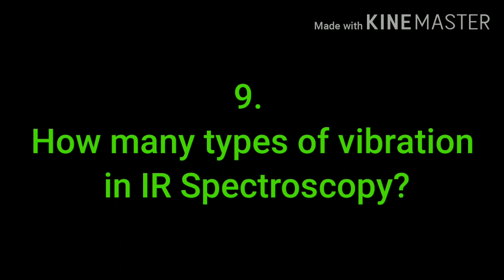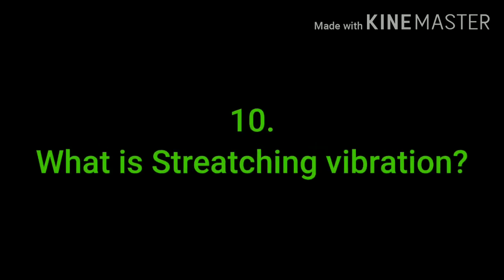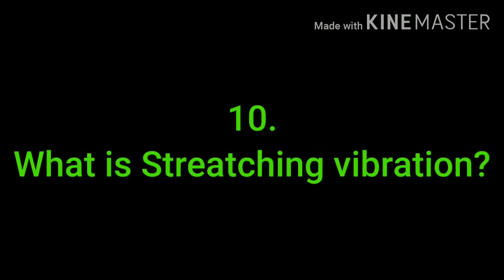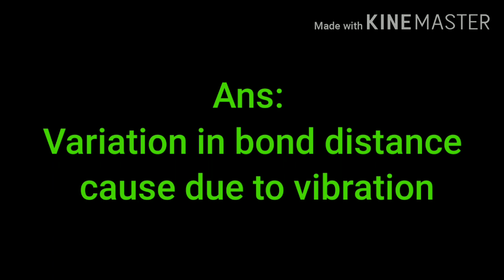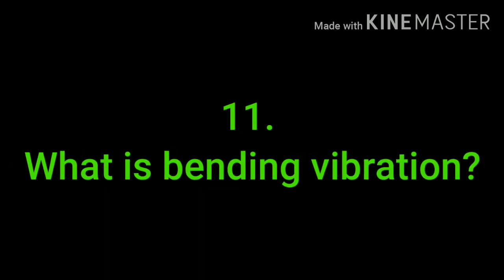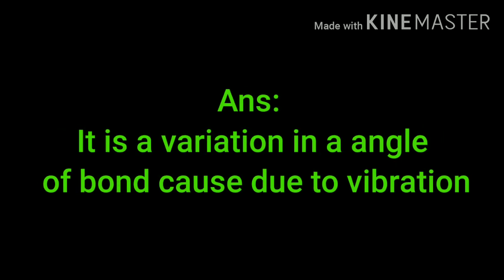How many types of vibration are there in IR spectroscopy? There are two types of vibration: stretching vibration and bending vibration. What is stretching vibration? A variation in bond distance caused due to vibration is called stretching vibration. What is bending vibration? A variation in the angle of a bond caused due to vibration is called bending vibration.